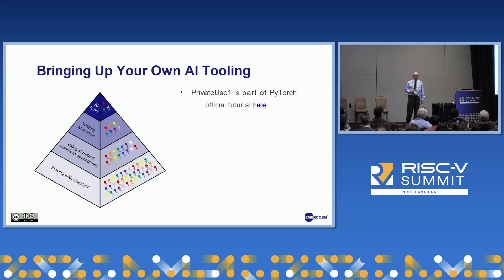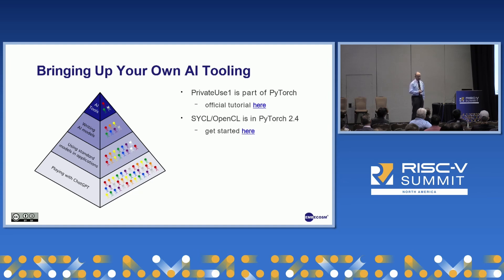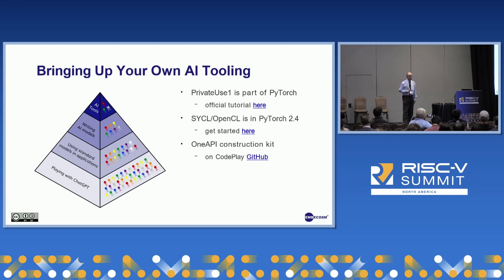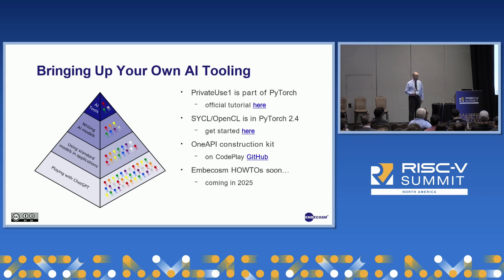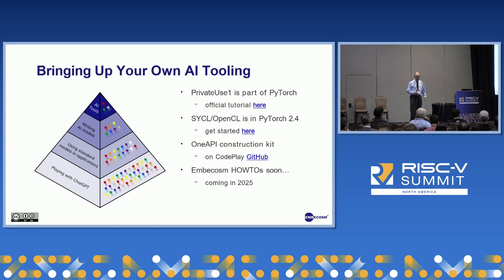How can we help? First, Private Use 1 is part of PyTorch — it's well documented with a tutorial, so you can just pick that up. SYCL and OpenCL are in PyTorch 2.4, and there's a whole load of tutorial material on how to use that. The oneAPI Construction Kit is on Codeplay's GitHub — Codeplay was acquired by Intel, so that's really Intel's GitHub. We're working on new how-tos for practical hands-on examples walking you through real practical cases, but those won't be available until next year. And of course, you can ask us for help — I'm here all this week and all next week. Come and see me; I'll be on the Embecosm booth as well.